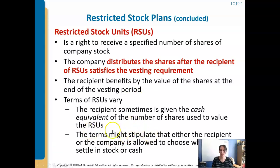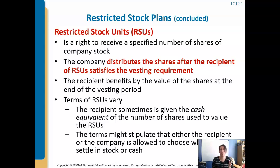One more point before we get into examples: the terms might stipulate that either the recipient or the company is allowed to choose whether to settle in stock or cash. So just because you're being awarded stock does not mean you have to take stock. In that case, they're given the cash equivalent — as if they purchased it and turned around and sold it immediately, getting the cash as the trade-off. So they never actually held the stock, maybe for just a day from a paperwork standpoint, then got the cash.